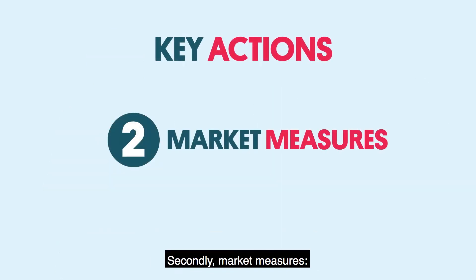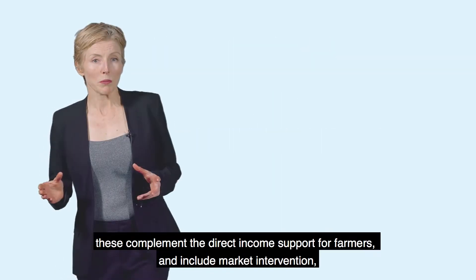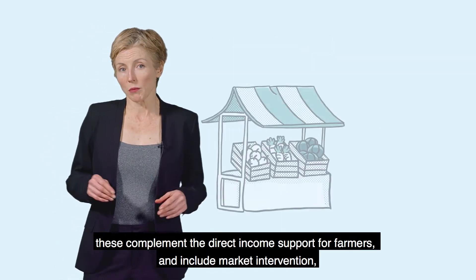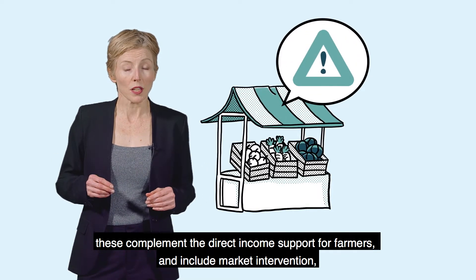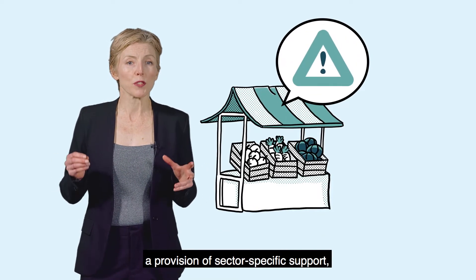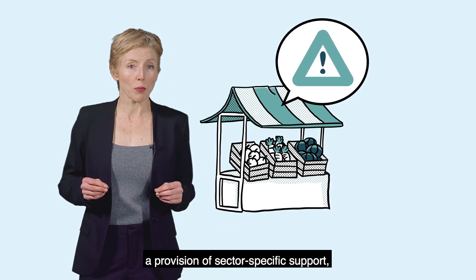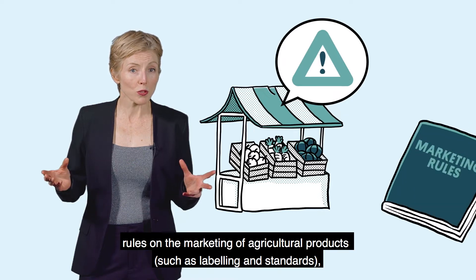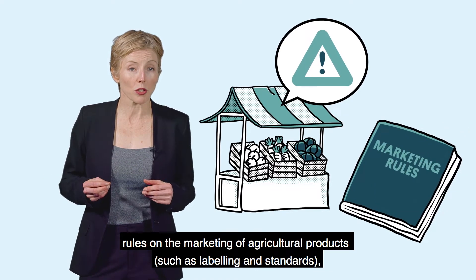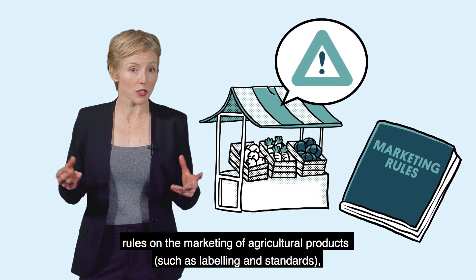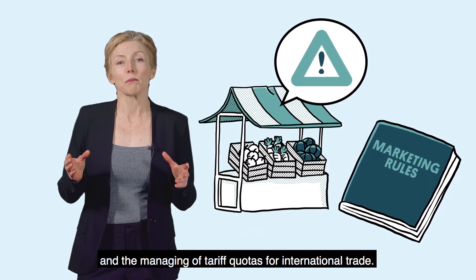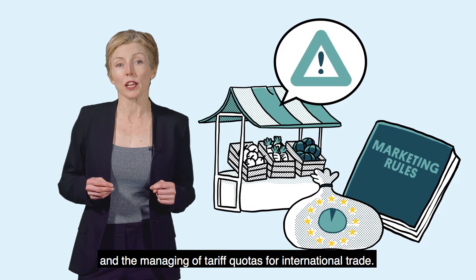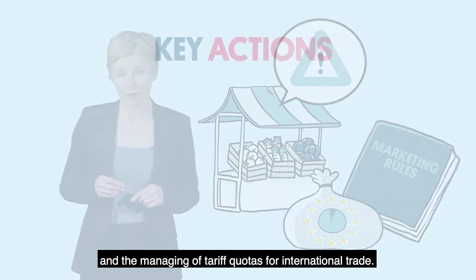Secondly, market measures. These complement the direct income support for farmers and include market intervention, a provision of sector-specific support, rules on the marketing of agricultural products such as labelling and standards, and the managing of tariff quotas for international trade.